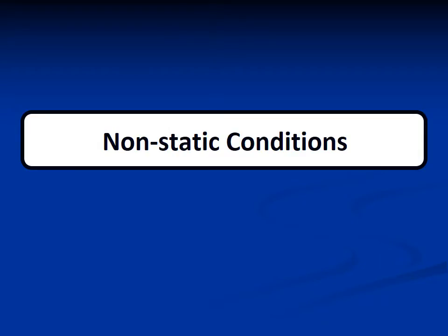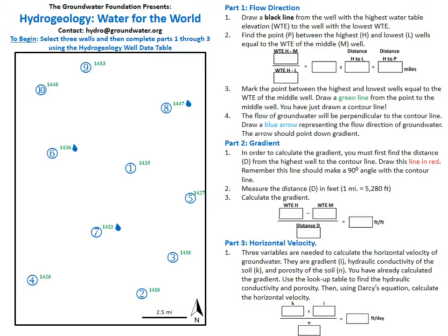Now that you have successfully calculated groundwater flow in natural conditions, we will move on to the more challenging anthropogenic, or non-static, conditions. In non-static conditions, we will label some wells as pumping water and thus introduce human impact. Starting with a new worksheet, we can follow the same steps as we did in static conditions. However, in this scenario, wells 6, 7, and 8 will be pumping water, and thus they will have a new water table elevation equal to the groundwater pumping elevation listed in the well data log. I have marked pumping wells with a blue raindrop.